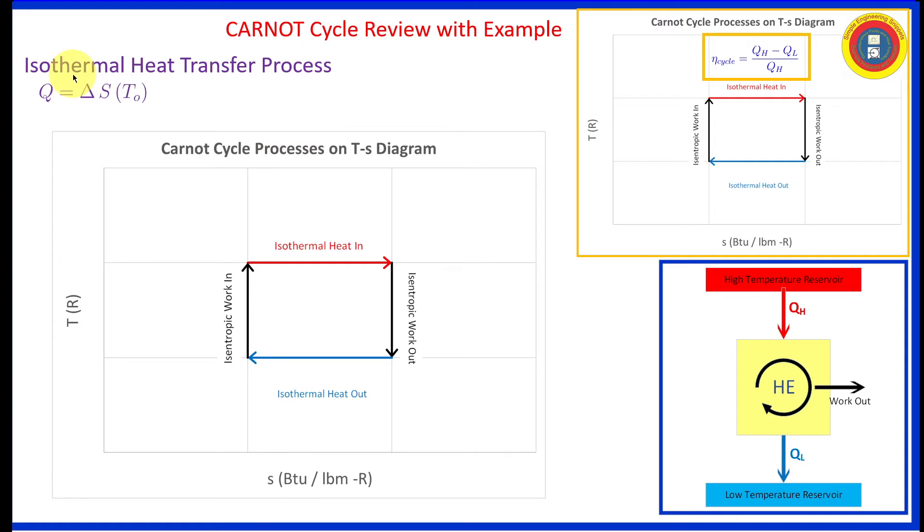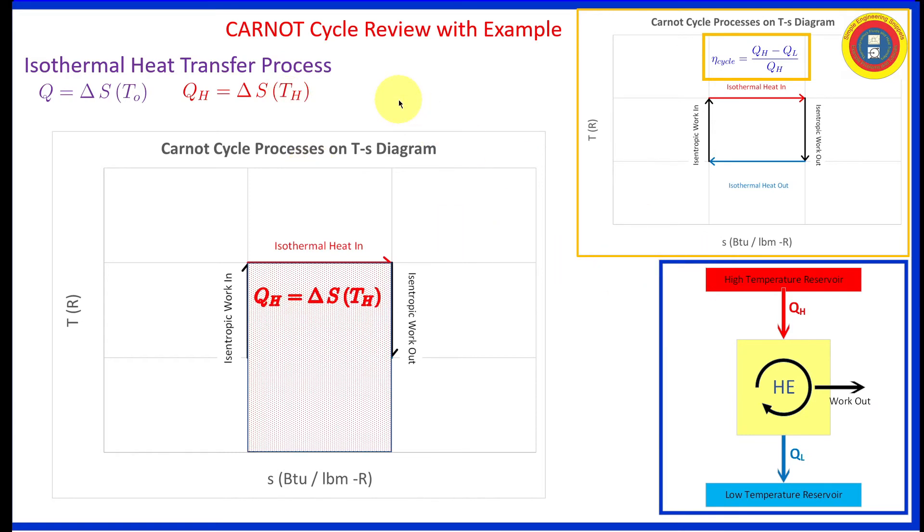Let's apply that to our isothermal heat in process. We can calculate QH, our heat in, is equal to the change in entropy times the absolute temperature of the high temperature reservoir. And the amount of heat transfer is shown by this red rectangle. It is the area under the process curve for isothermal heat in.